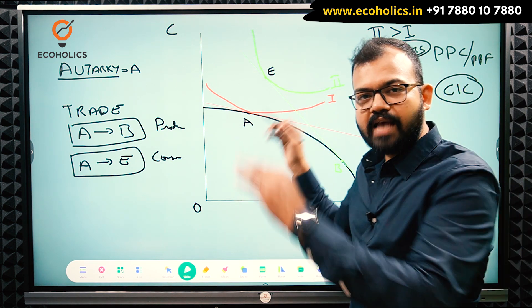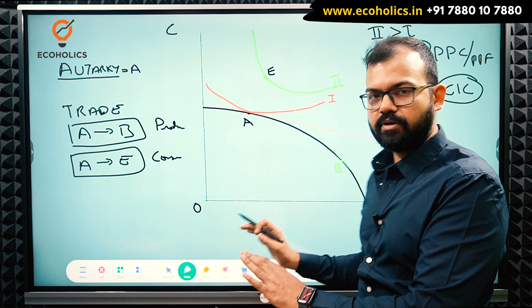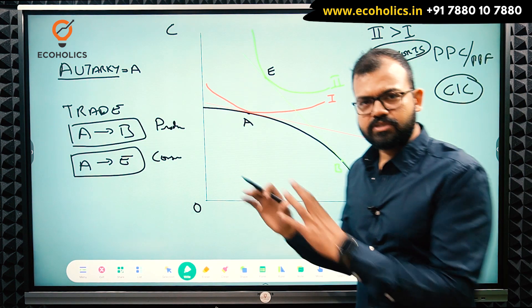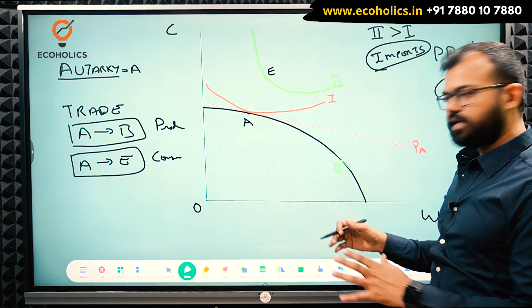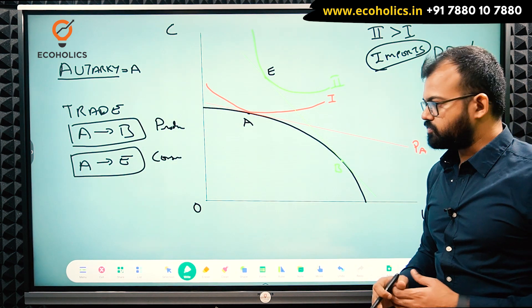I can say that indifference curve 2 is better than 1 because this is the simplest property of indifference curves. As you go higher, you will be better off. In the same lines, India can consume at E point with the help of imports.